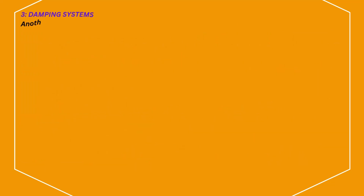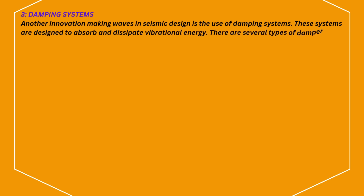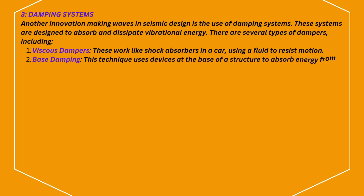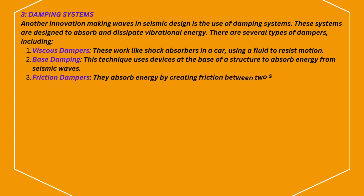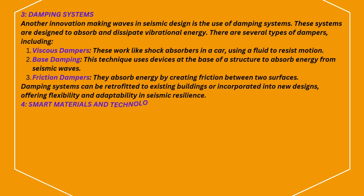Damping systems. Another innovation making waves in seismic design is the use of damping systems. These systems are designed to absorb and dissipate vibrational energy. There are several types of dampers: viscous dampers, which work like shock absorbers in a car using a fluid to resist motion; base damping, which uses devices at the base of a structure to absorb energy from seismic waves; and friction dampers, which absorb energy by creating friction between two surfaces. Damping systems can be retrofitted to existing buildings or incorporated into new designs, offering flexibility and adaptability in seismic resilience.